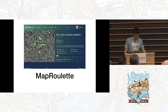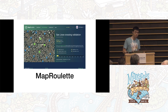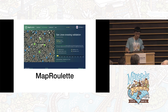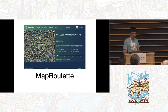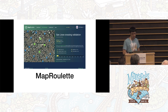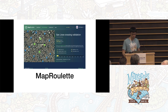Exported Overpass results — for example as GeoJSON — can be imported into several OSM-related tools. For instance, you can query Overpass for problematic tags, maybe some typos or things that need attention, and then export the results to MapRoulette, which makes it easy to coordinate a campaign to fix those things with others.